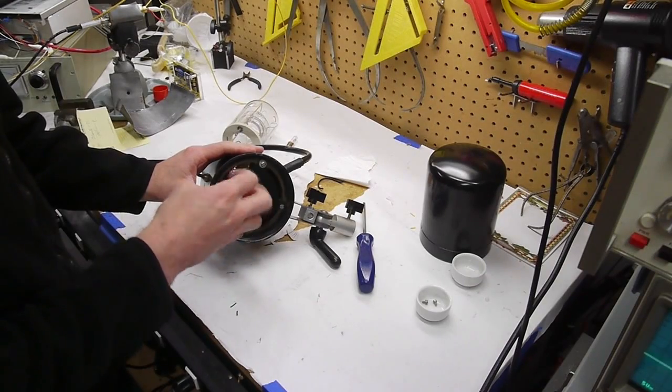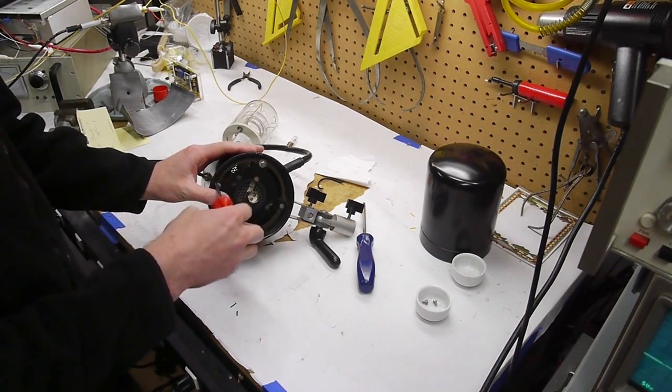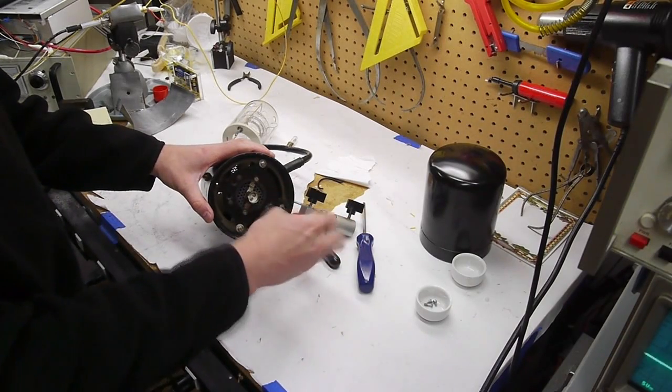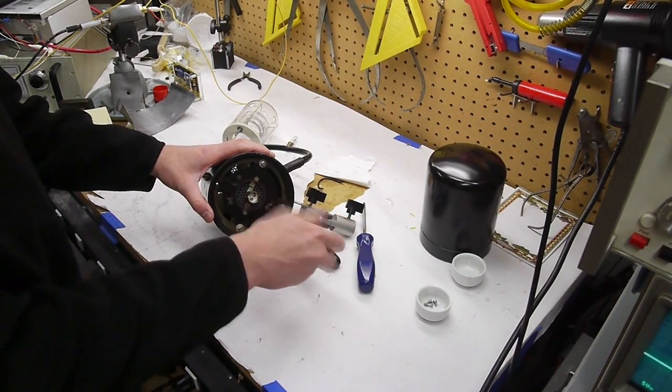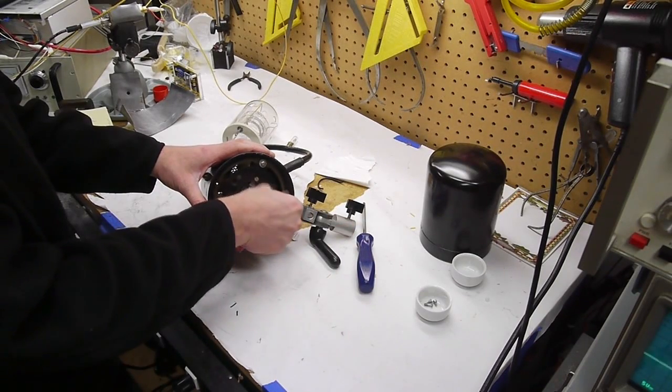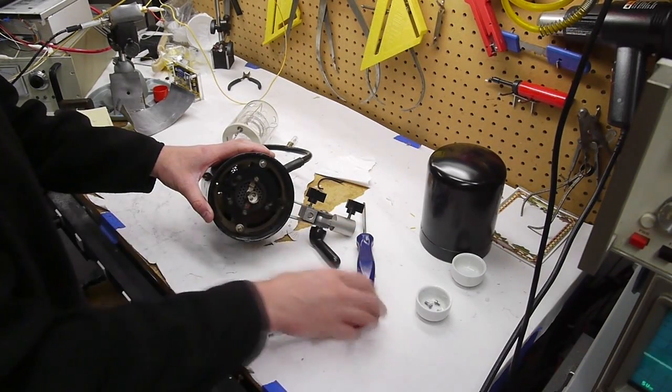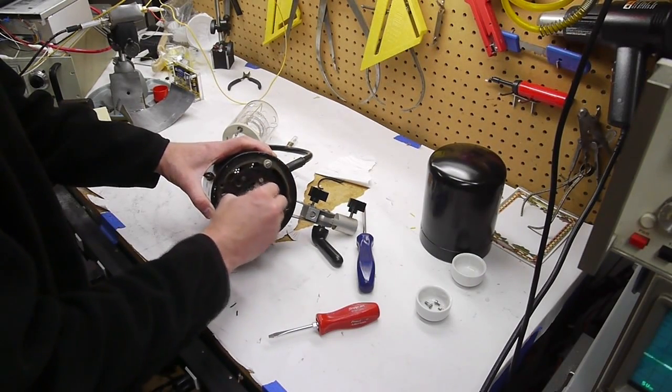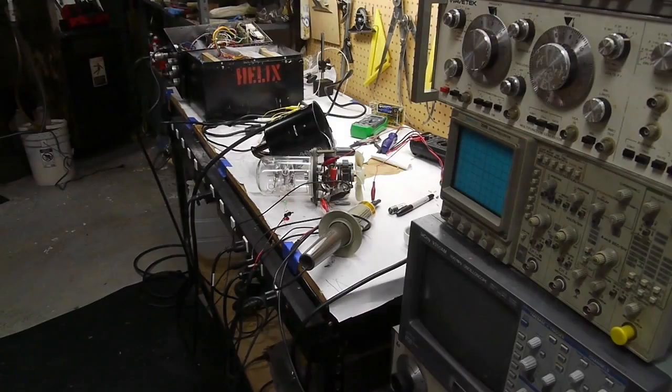I took apart a Speedotron 4803 head unit and discovered there's a pulse transformer inside. There are two large wires which supply the capacitor voltage out to the strobe light, and when the unit wants to cause a flash it sends a pulse to the transformer which kicks up probably a few thousand volts to initiate the strobe.